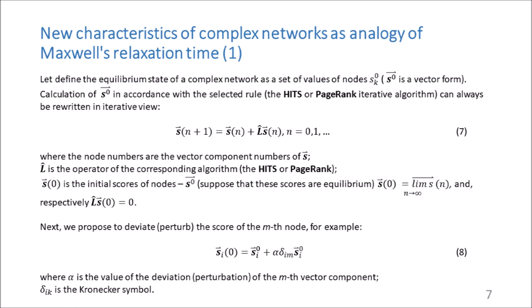We define the equilibrium state of the complex network as a set of values of nodes — vector s subscript 0 — determined in accordance with a setting rule; for example, in accordance with their scores obtained by the HITS or PageRank algorithm (see equation 7). We then consider the initial scores vector s of 0 as a solution, supposing that these scores are at equilibrium. Next, we propose to deviate, or in other words perturb, the score of the m-th node as shown in equation 8. In vector form, this means the deviation of the equilibrium state of one component projection of the vector s subscript 0.